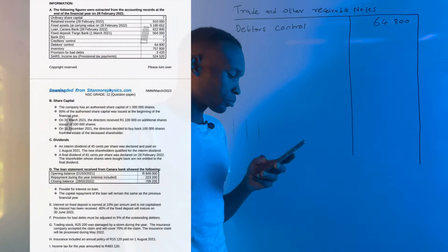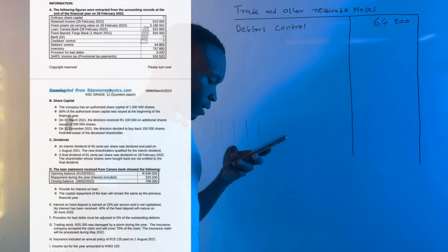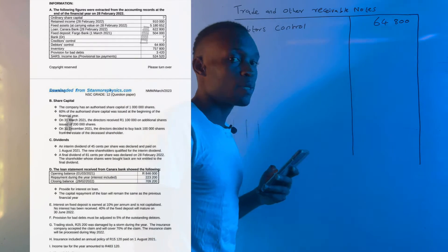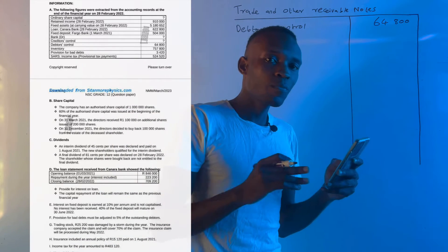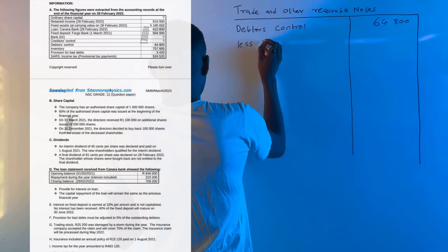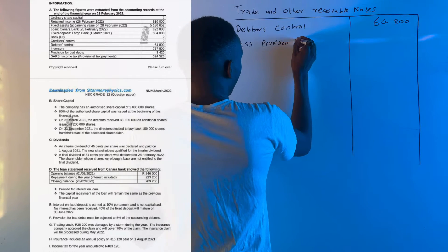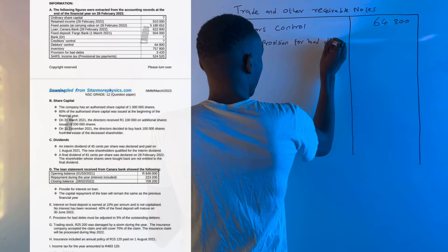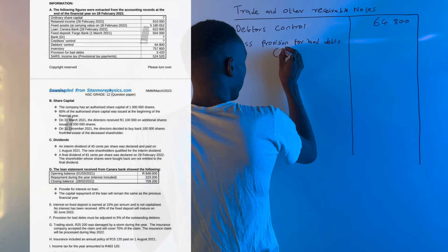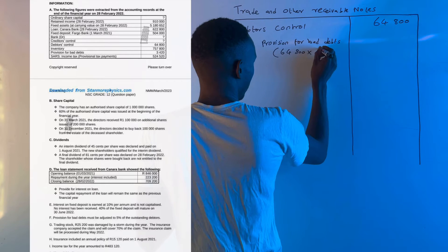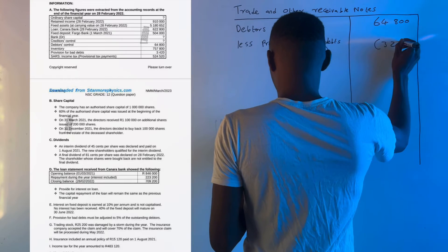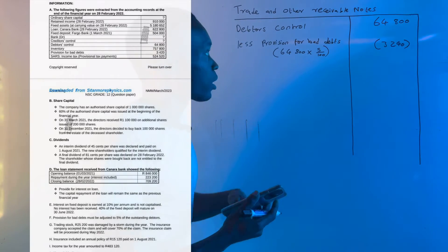Looking at transaction F, the provision for bad debts must be adjusted to five percent of outstanding debtors. In other words, five percent of R64,800 must be subtracted to get the net debtors figure. So we record: less provision for bad debts — R64,800 multiplied by five percent, which gives us R3,240, shown in brackets to indicate subtraction.